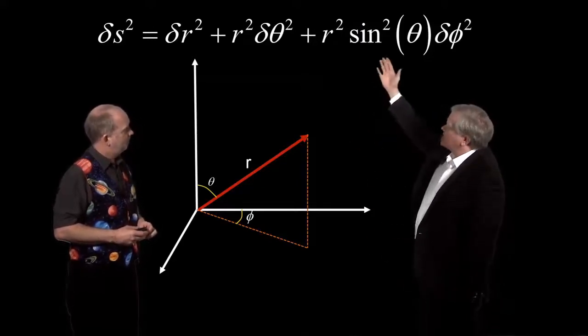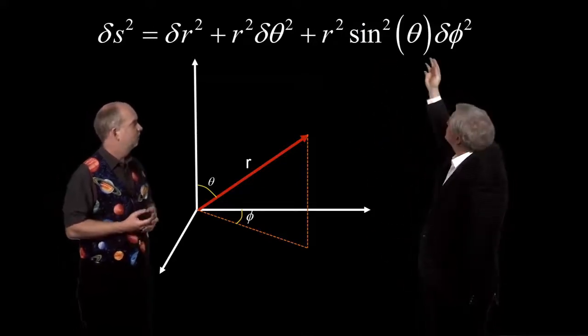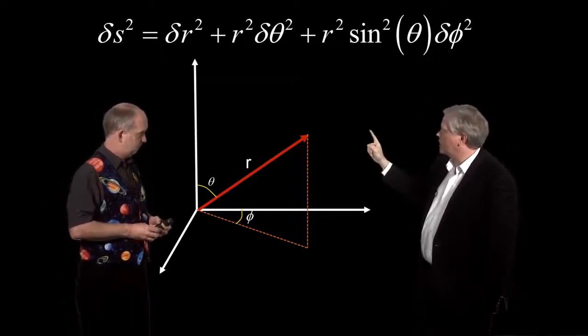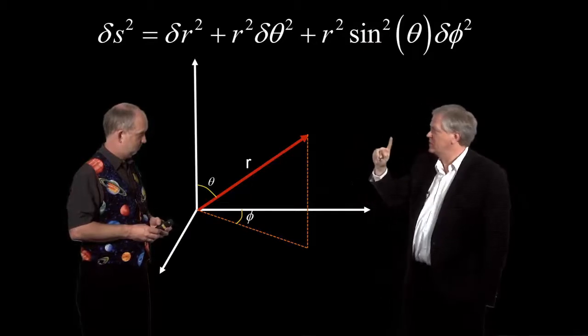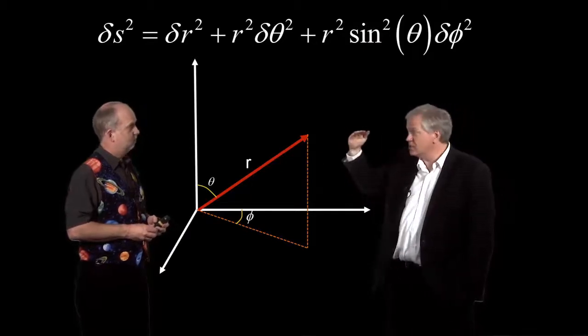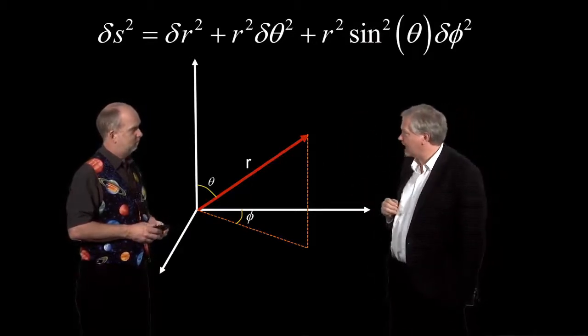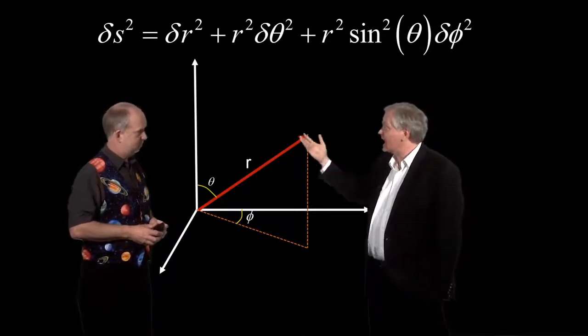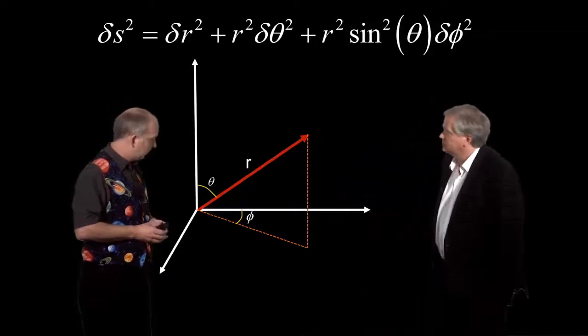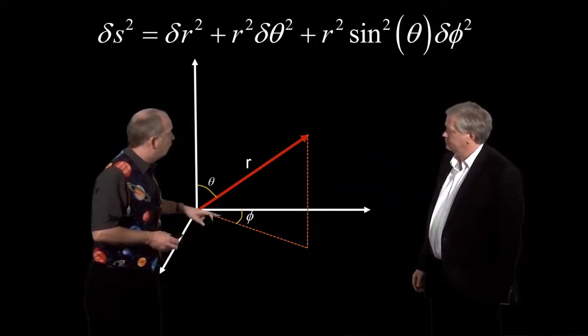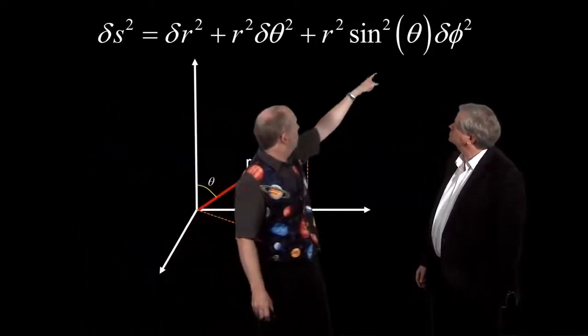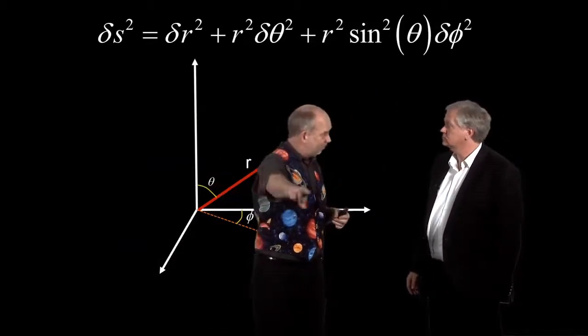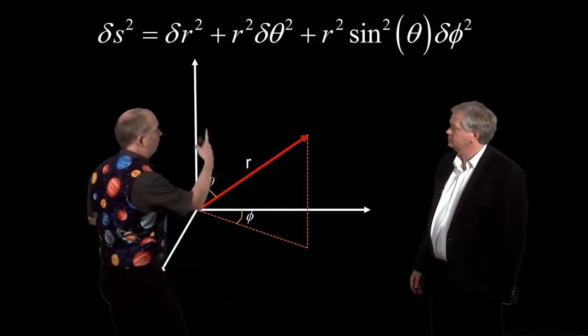Then we get to the slightly more complicated one, which is in the phi direction. And so this is like going in a circle around the Earth, not at the equator, but up at some latitude. So let's say, doing, circumnavigating the Earth at 45 degrees south, for example. And what you can see is that if you're at the equator, the sine theta is just one, so around the equator, it's just angle times radius, just like you've had for theta.